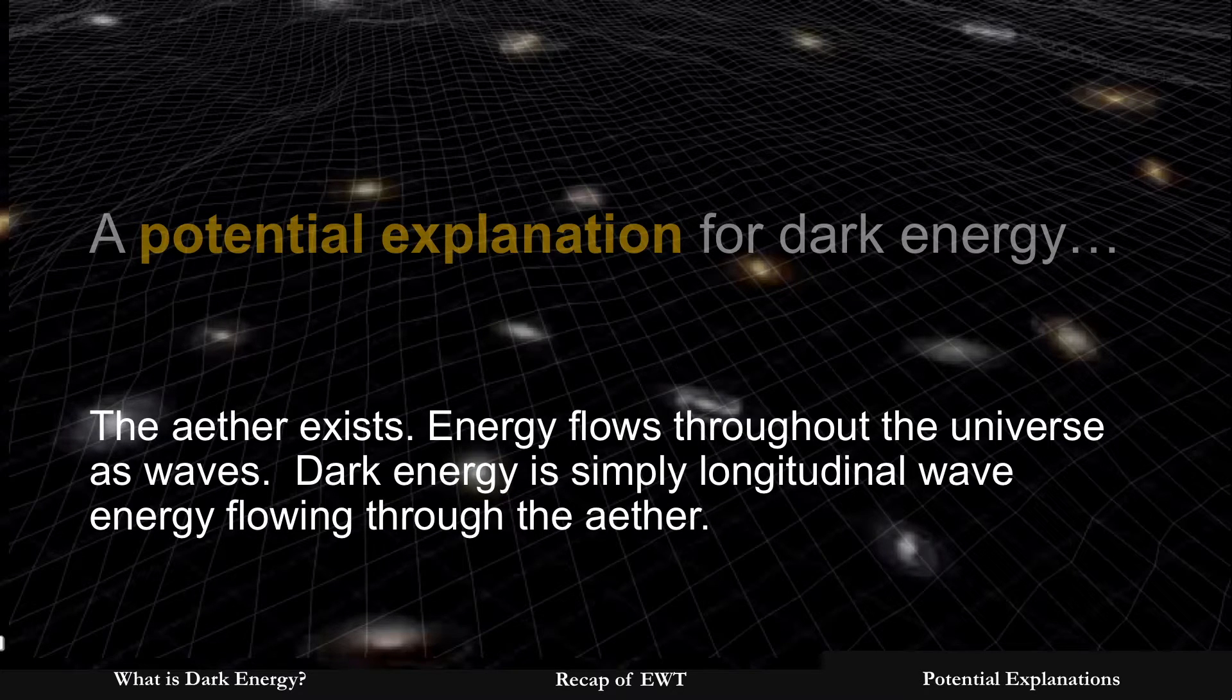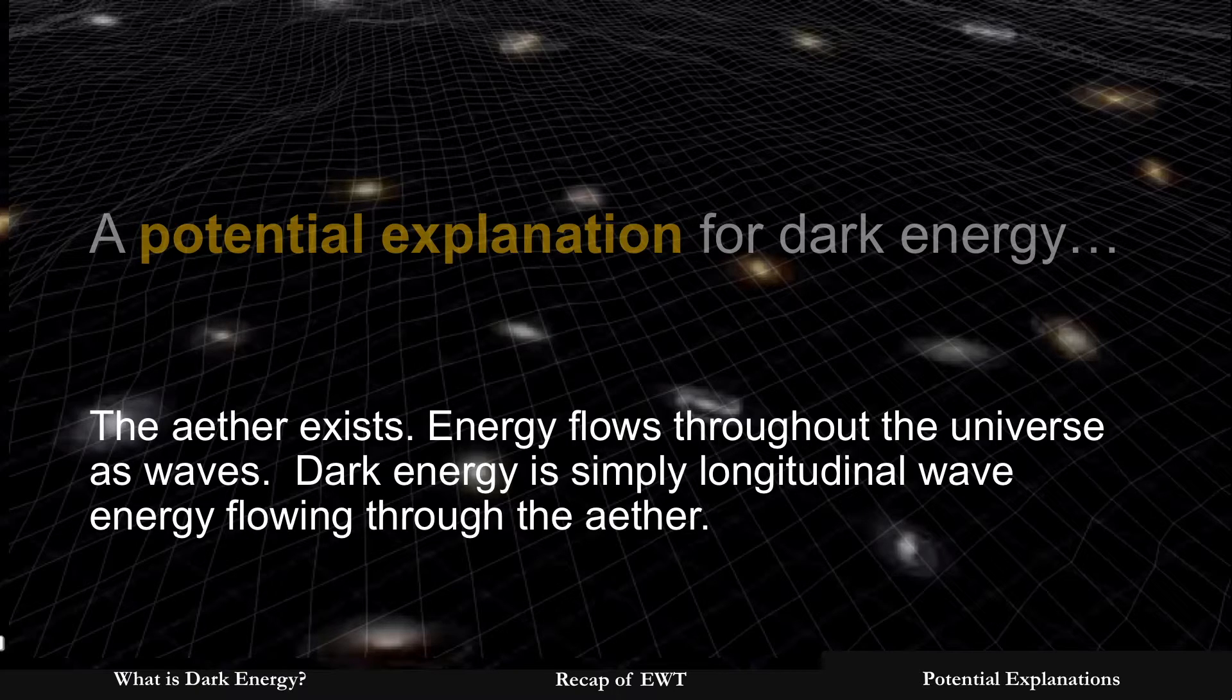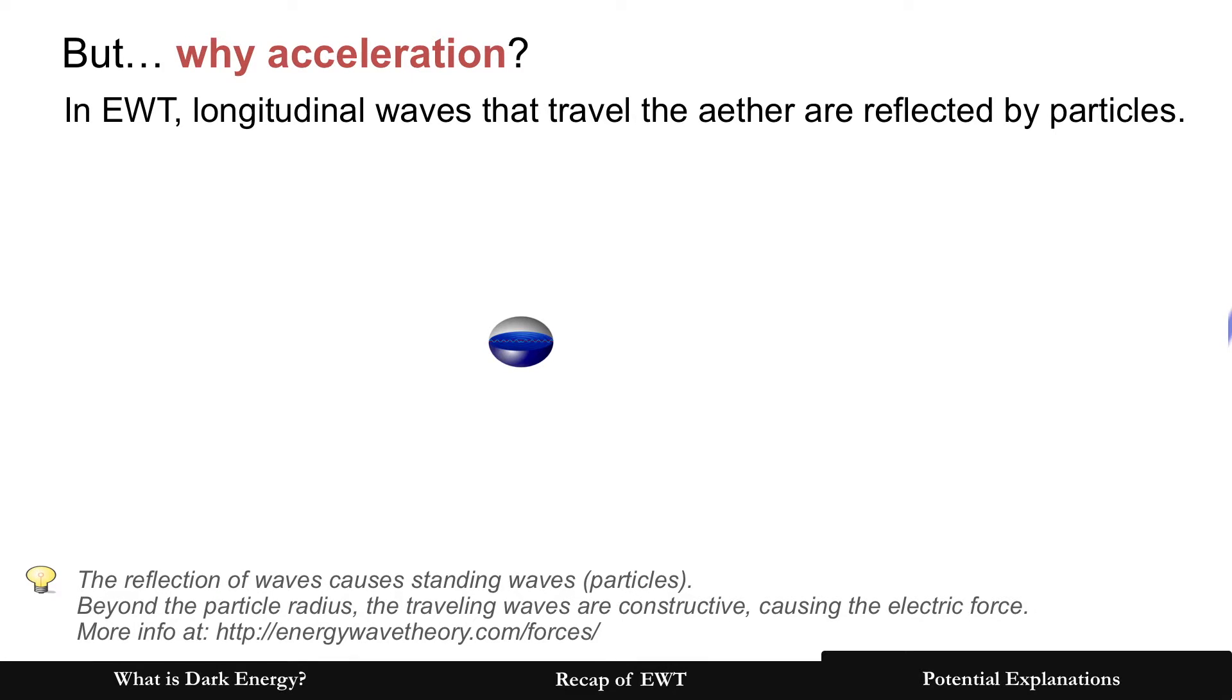If you assume an ether exists, then that is an easy answer: energy is already flowing through the universe as waves. That is the energy we can't see. It's simply longitudinal wave energy which accounts for mass and the electric force. It also accounts for gravity, but I'm going to stay focused here on what is dark energy. In this case, it's just the longitudinal waves that are flowing between the galaxies, but it still doesn't answer why it's accelerating, so we're going to take that a step further.